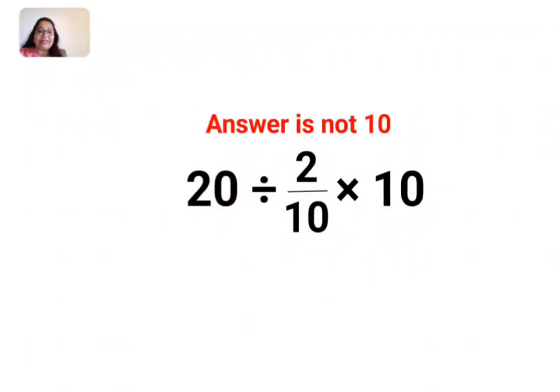Welcome everyone. So today we are going to understand why the answer for this question is not supposed to be 10. So this looks so easy, right? 20 divided by 2 upon 10 multiplied by 10.